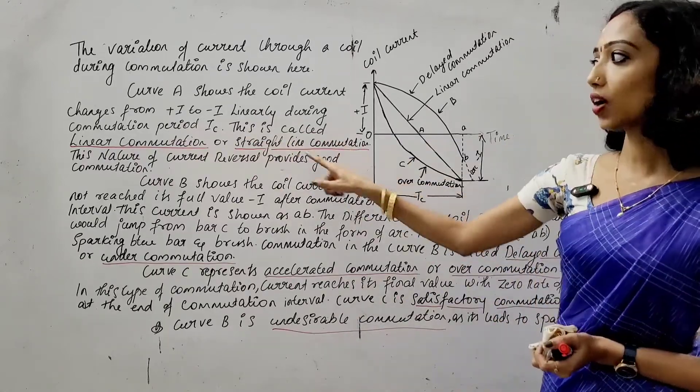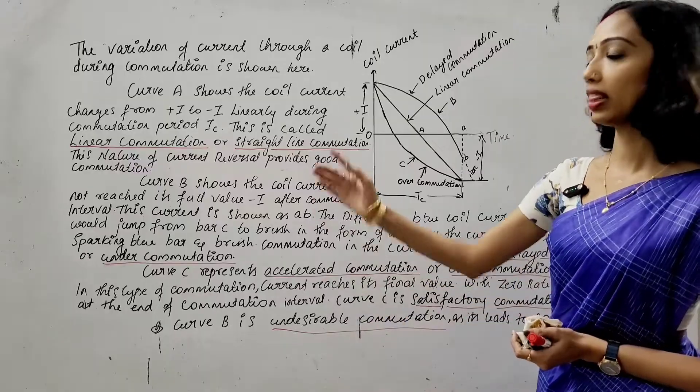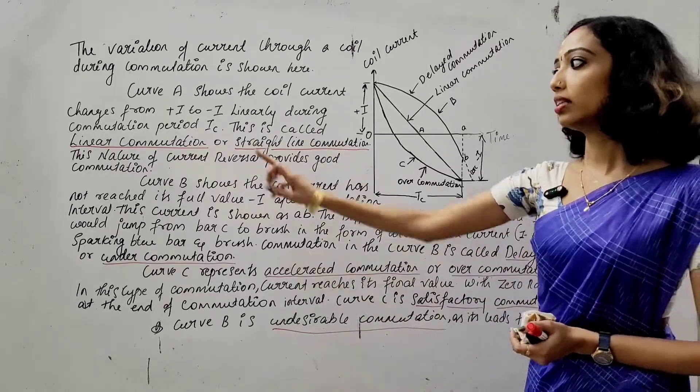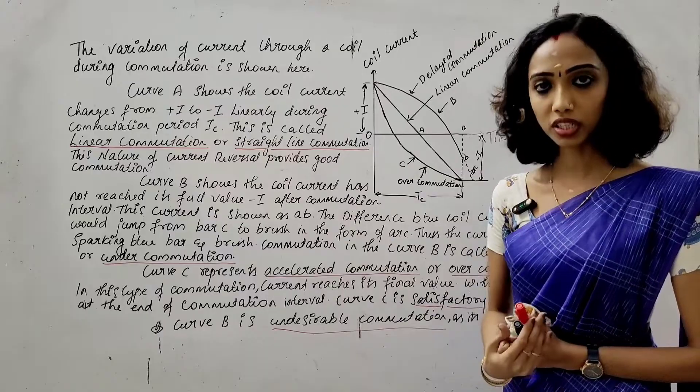This is called linear commutation or straight line commutation. This nature of current reversal provides good commutation.